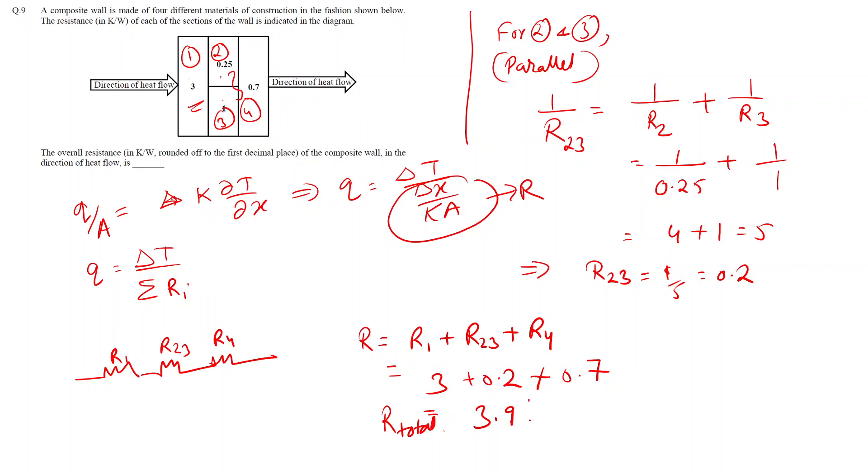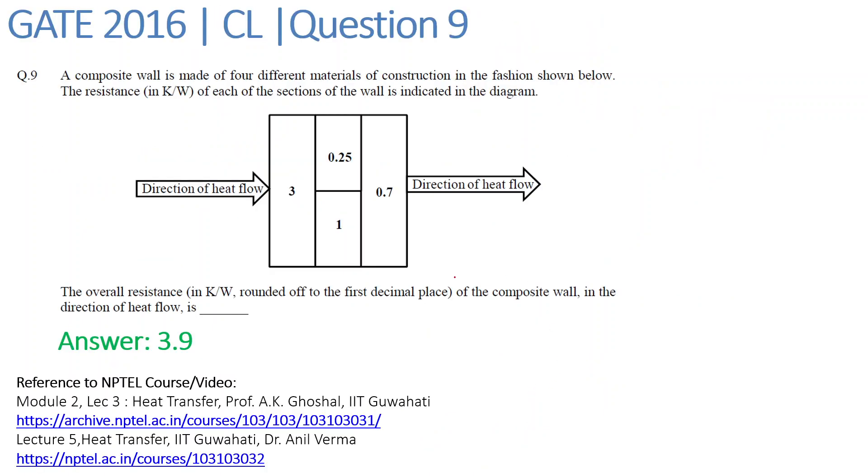So the overall resistance we found out to be 3.9. We have to write this answer rounded to the first decimal place, so we will report the answer as resistance = 3.9. That is our final answer.